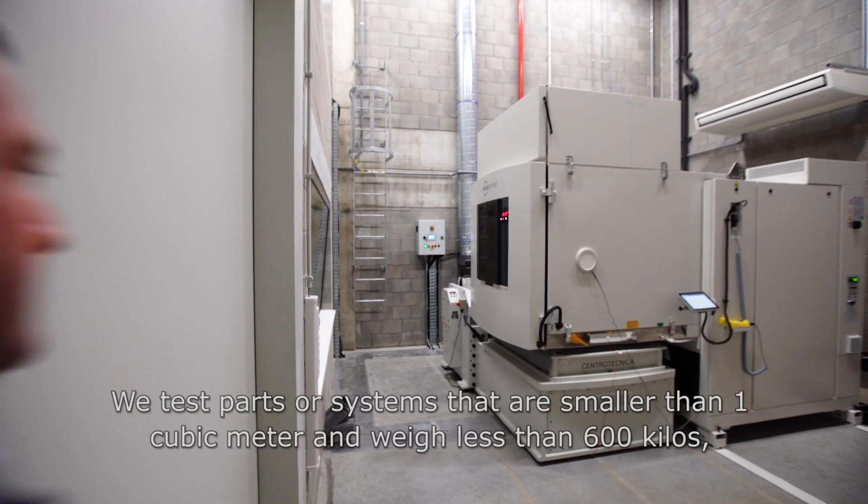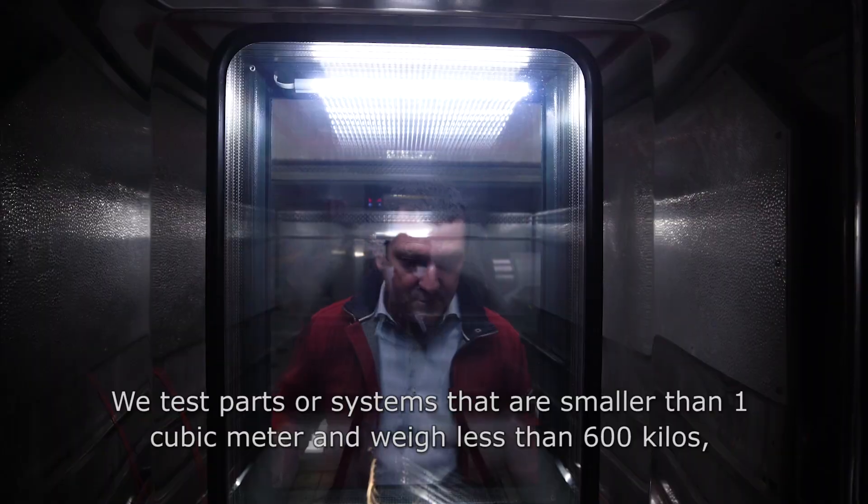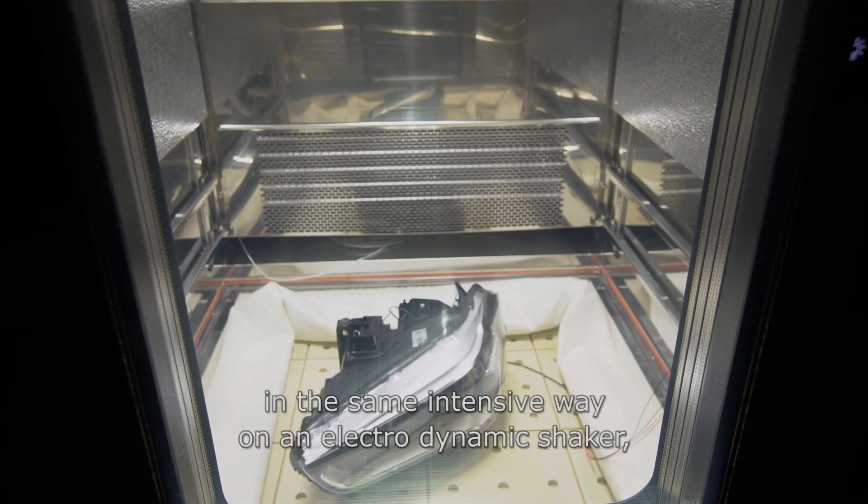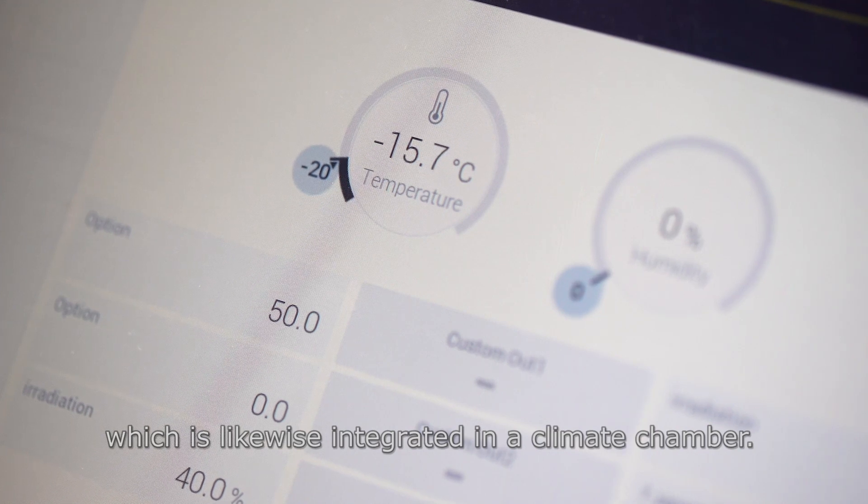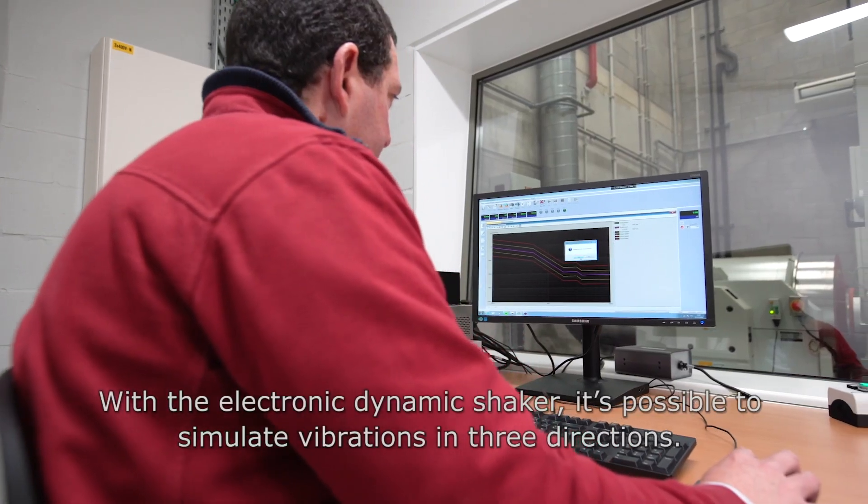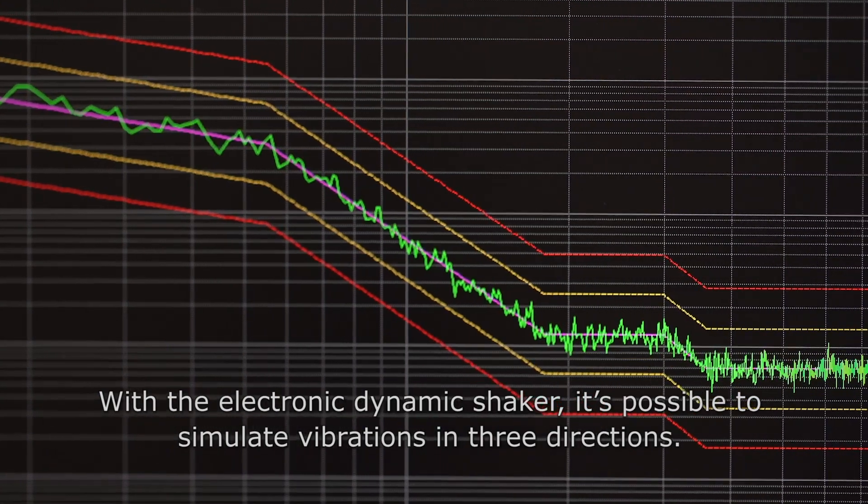We test parts or systems that are smaller than one cubic meter and weigh less than 600 kilos in the same intensive way on an electrodynamic shaker, which is likewise integrated in a climate chamber. With the electrodynamic shaker, it's possible to simulate vibrations in three directions.